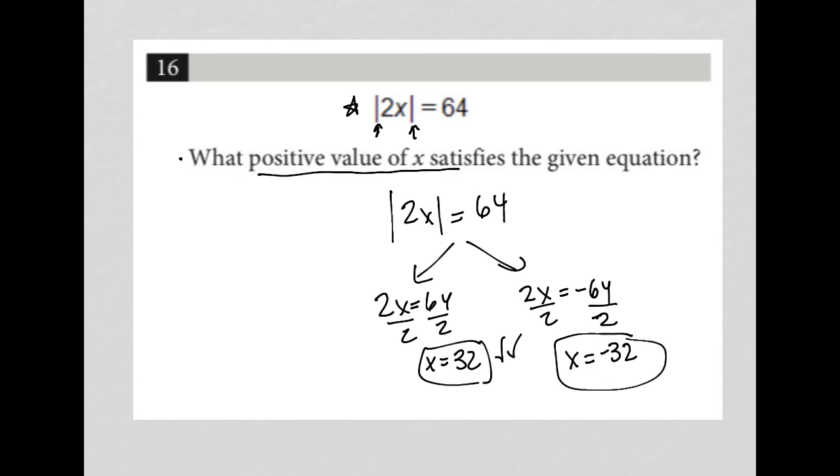Therefore, our correct answer must be 32. And of course, you could always plug that in to make sure, right? So 2 times 32 is 64. The absolute value of 64 is 64. So we know that 32 is the correct answer.